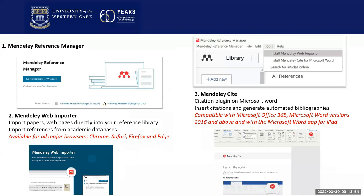The Mendeley Reference Manager has three components you need to integrate for each to work well. The first download is the Mendeley Reference Manager desktop application. Once you've downloaded that, under the tools menu, you'll be able to install the web importer and install the Mendeley cite plugin for Microsoft Word — that is the citation plugin — as well as search for online articles.